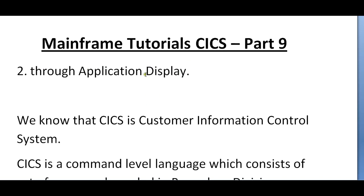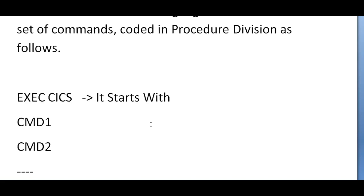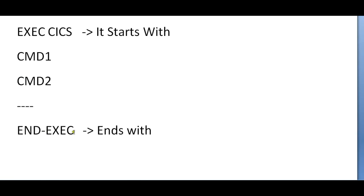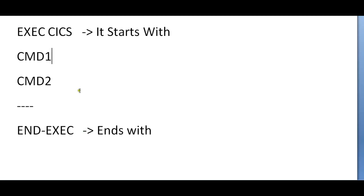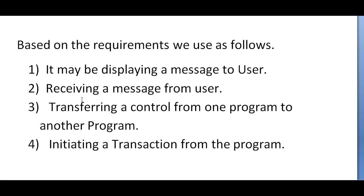CICS is a Customer Information Control System. It is called a command level language which consists of a set of commands coded in the procedure division. We start with EXEC CICS and it ends with END-EXEC. Whenever you write a COBOL program and want to call a CICS command, you start with EXEC CICS, end with END-EXEC, and write your commands in between.